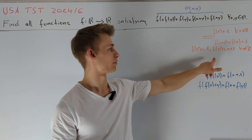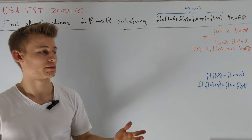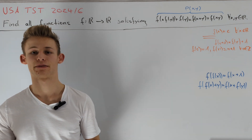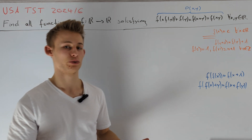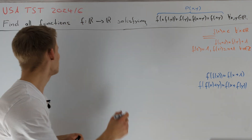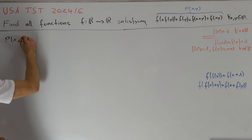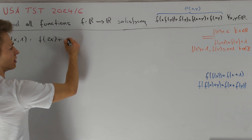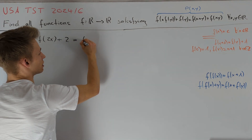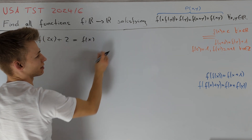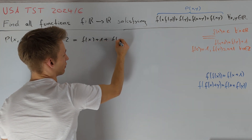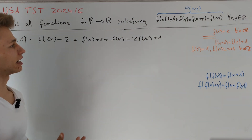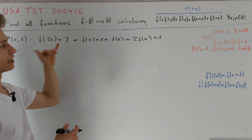Now we can evaluate f on the integers, so our next step is to evaluate f(nx) for integer n. We only need this for n = 2. P(x, 1) gives f(x·f(1)) + f(1) = f(x+1) + f(x), i.e., f(2x) + 2 = 2f(x+1) = 2f(x) + 2, so f(2x) = 2f(x) − 1. This gives us a formula to calculate f(2x) in terms of f(x).